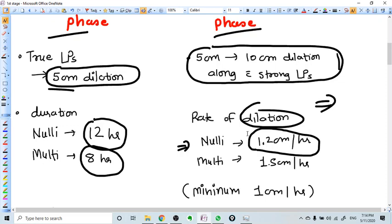We call it prolongation of latent phase in nulliparous women when it's more than 20 hours. The values for multiparous women is eight hours.